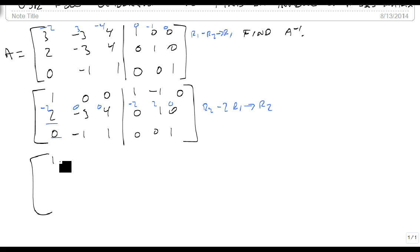Add those together: 1 0 0, 1 minus 1 0, 0 minus 3, 4, minus 2, 3, 0, and 0 minus 1, 1, 0, 0, 1.